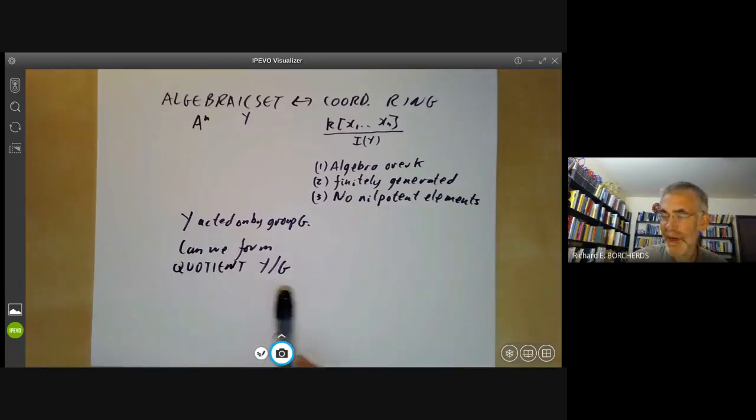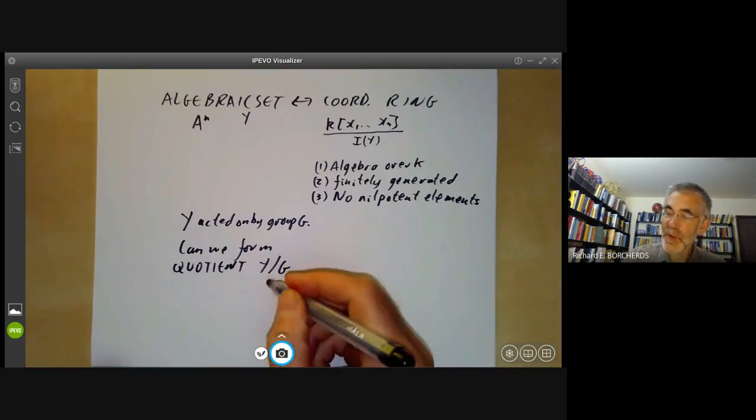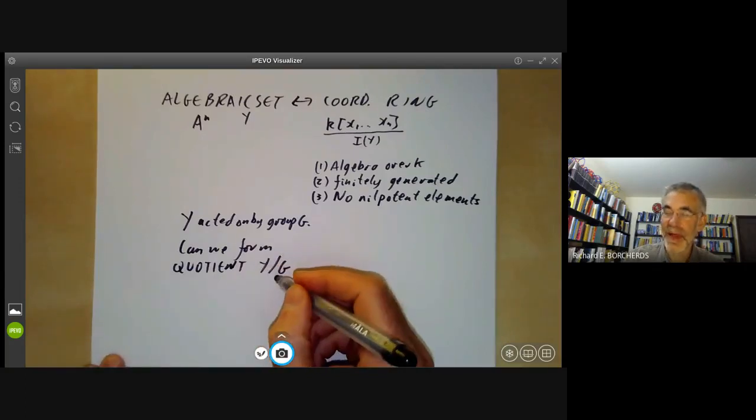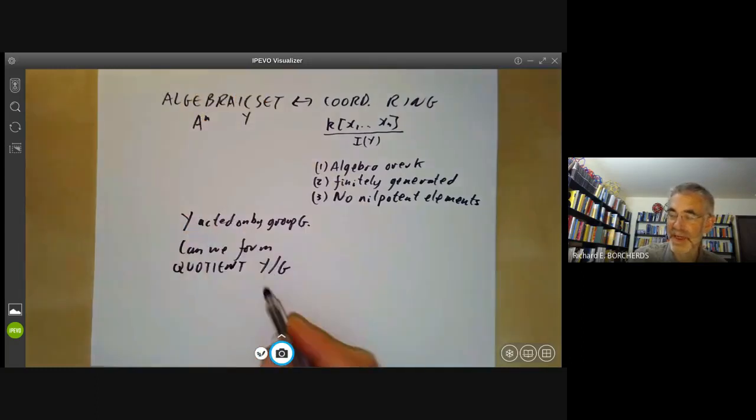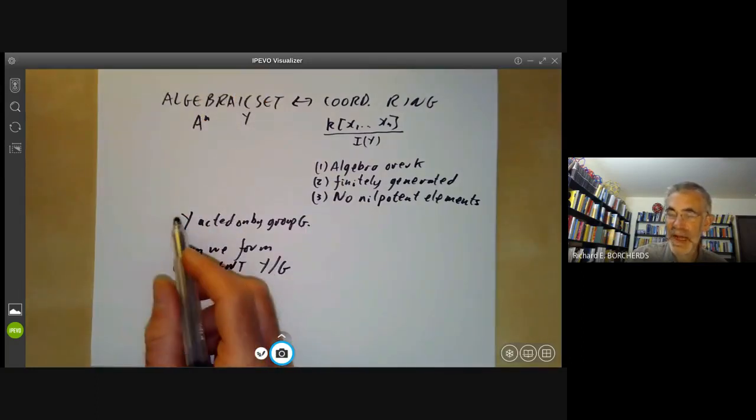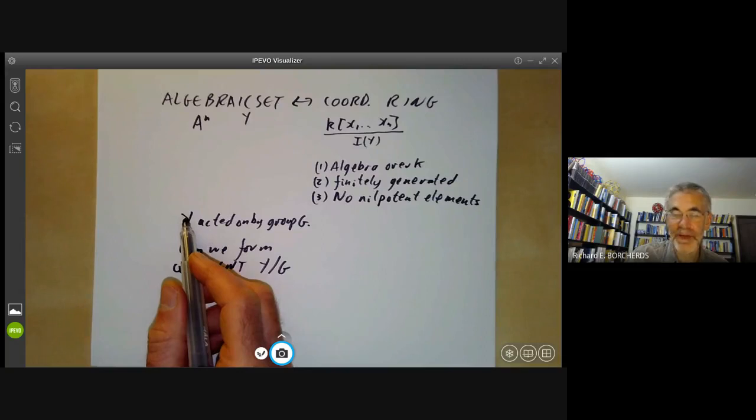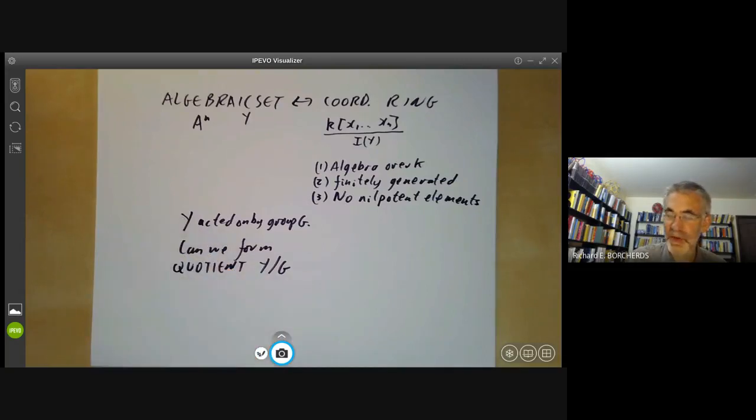If you try forming equivalence classes of points of Y under G you immediately run into problems. For instance, how do we embed this inside some affine space? We said an algebraic set was contained in an affine space, and if you start identifying points inside affine space it's not at all clear how you're going to embed that quotient in affine space. However, if you look at it from the point of view of coordinate rings, this is much easier to do.